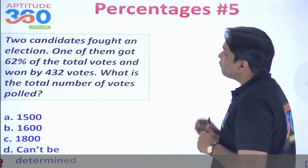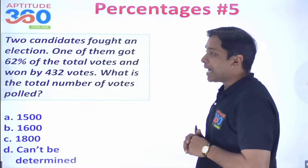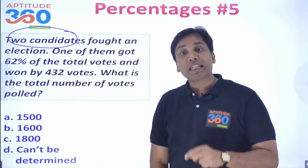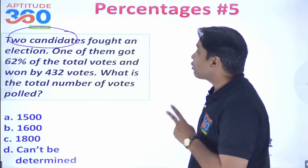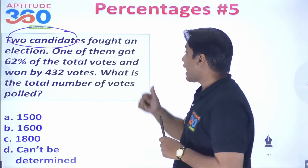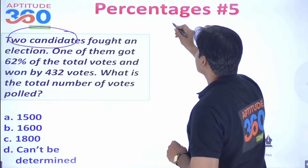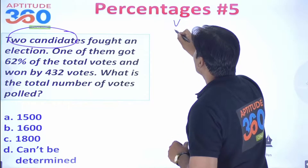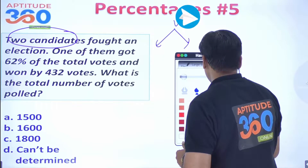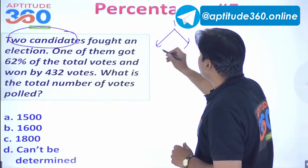Let us get started with the very first problem. Two candidates take part in an election. Be mindful — how many candidates? Only two candidates. One of them got 62% of the total votes and won by 432 votes. We need to find out the total number of votes that were polled.